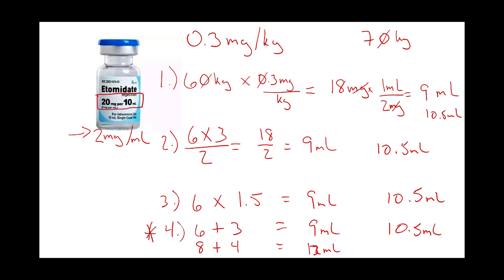For an 80 kilogram patient: drop the zero to get 8, plus half of itself is 4, equals 12 milliliters. You can verify: 8 times 1.5 equals 12. For a 40 kilogram patient: 4 plus 2 equals 6 milliliters. For a 100 kilogram patient: 10 plus 5 equals 15 milliliters. That's how many milliliters you're drawing up — it's that fast.